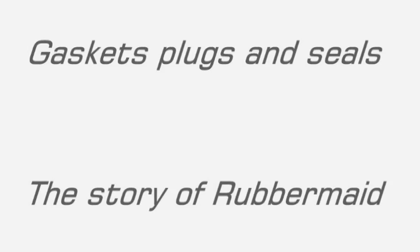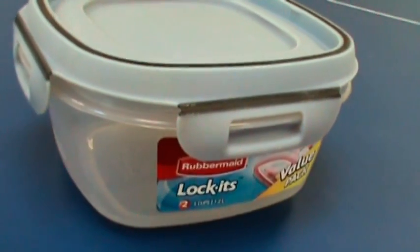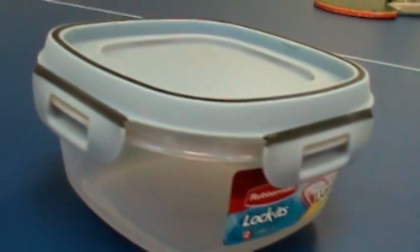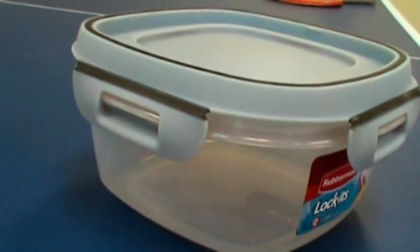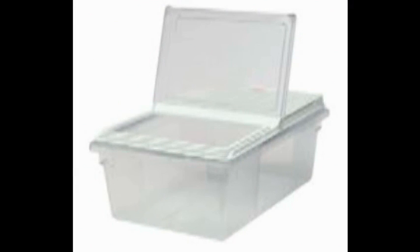Rubbermaid is a major manufacturer of home and food storage containers. In their plastic container designs, they extensively use molded seals and gaskets. A gasket, or mechanical seal, is a device which helps join systems or mechanisms together by preventing leakage, containing pressure, or excluding contamination.